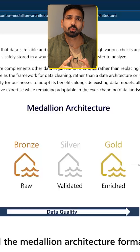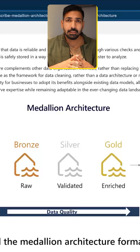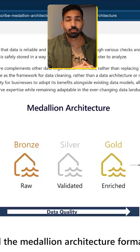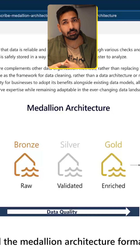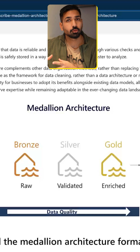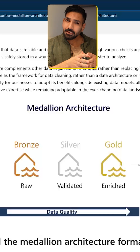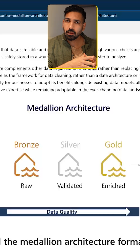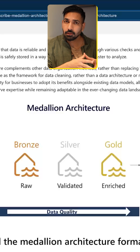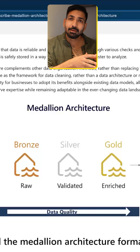The very first layer is the bronze layer. The bronze layer's purpose is mainly just to bring the data inside your platform. This data would be the raw data — you are not going to modify this data.